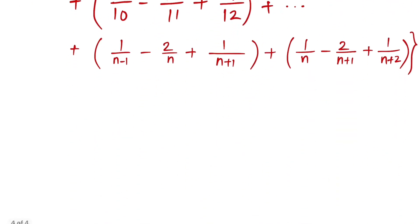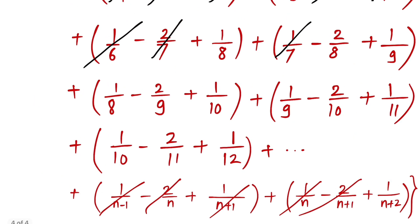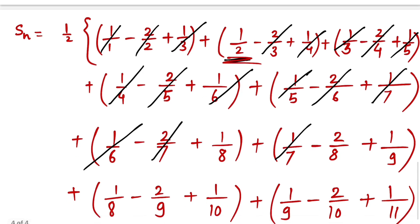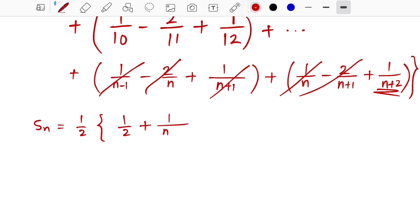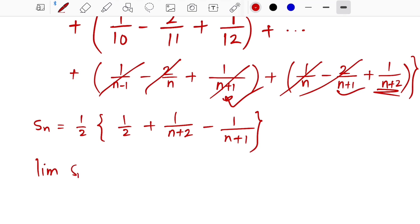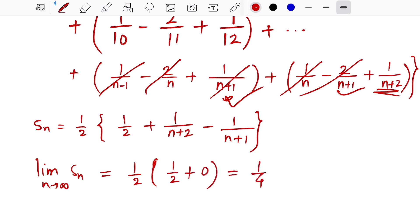After cancellation, Sₙ = 1/2 · [1/2 + 1/(n+2) - 1/(n+1)]. Now take the limit as n→∞: 1/(n+2) → 0 and 1/(n+1) → 0. So the sum = 1/2 · (1/2 + 0) = 1/4 = 0.25. This is our answer: the sum of the series is 0.25.